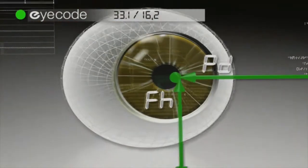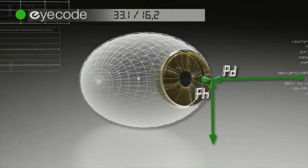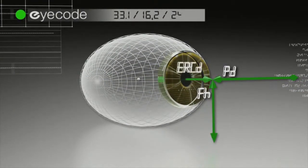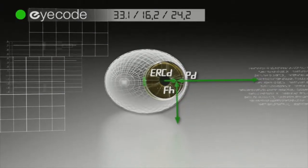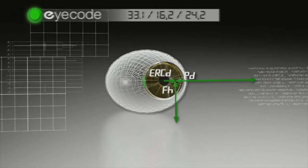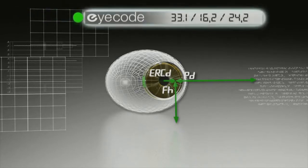The ERC is the new reference for pupillary distance and fitting height measurements. And what was an approximate vertex distance is now replaced by the distance between the eye rotation center and the lens, called the ERC distance, or ERCD.